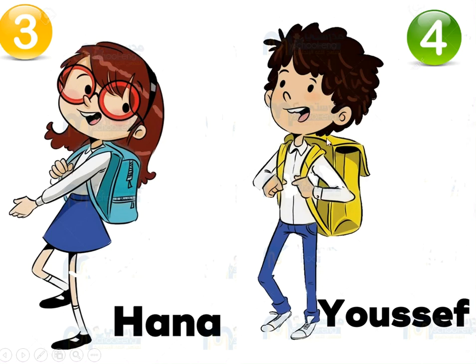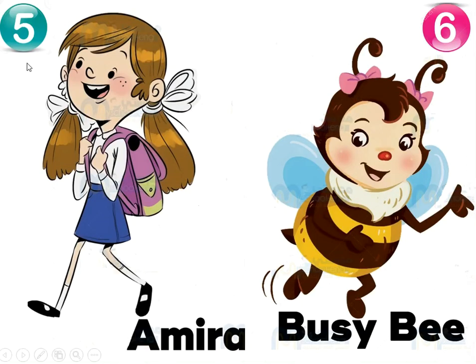Number four: He is Yusuf. هو بيكون Yusuf. He is a boy. ولد. Number five: She is Amira. She is a girl. هي بتكون أميرة، اسمها أميرة. هي بتكون بنوتا.